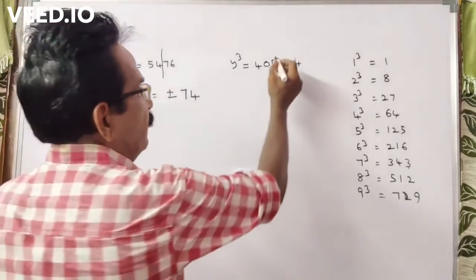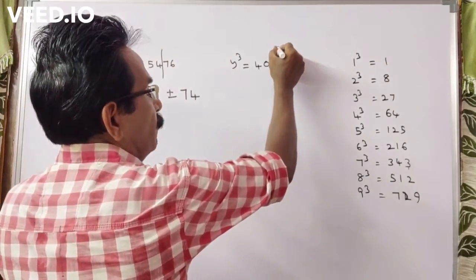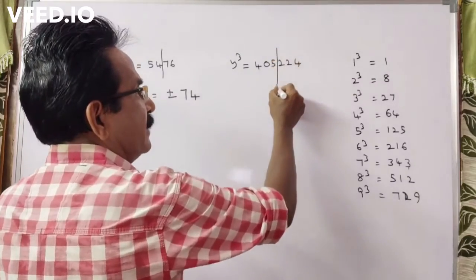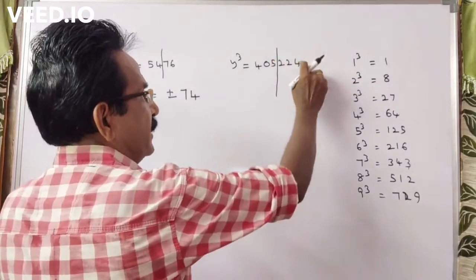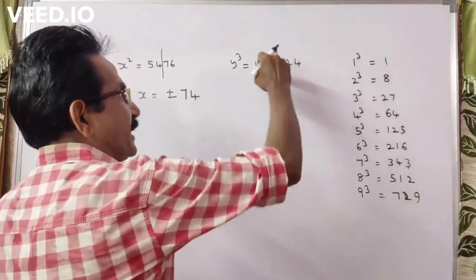Let us find the value of y. To find the cube root, draw a line after 3 digits from the right end.